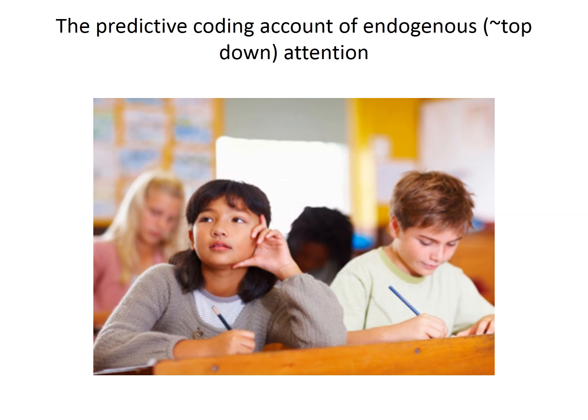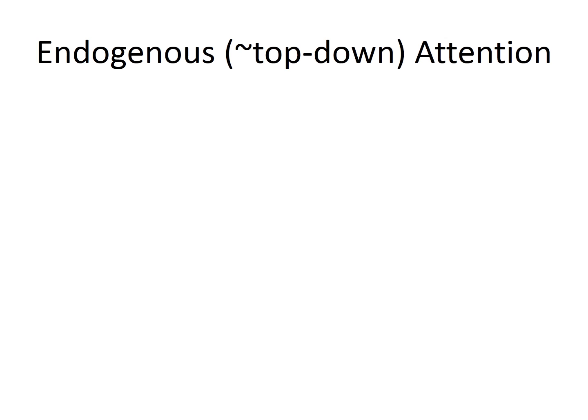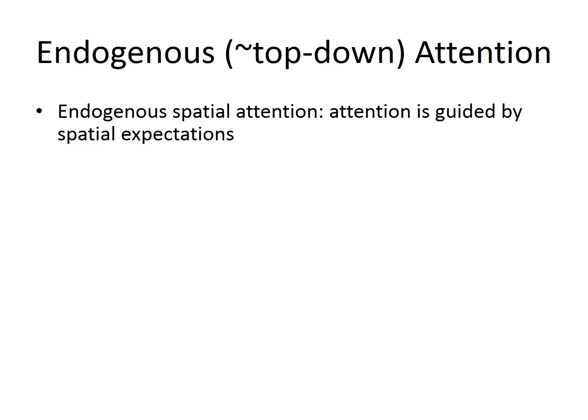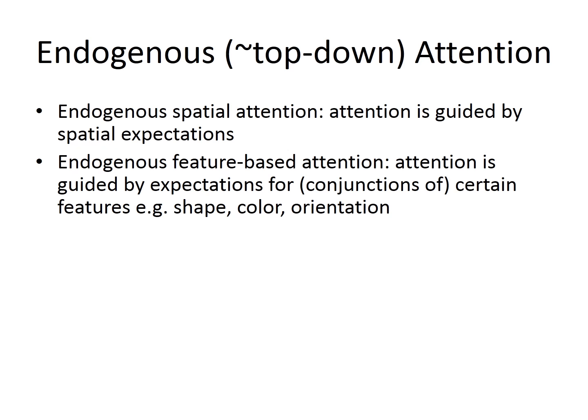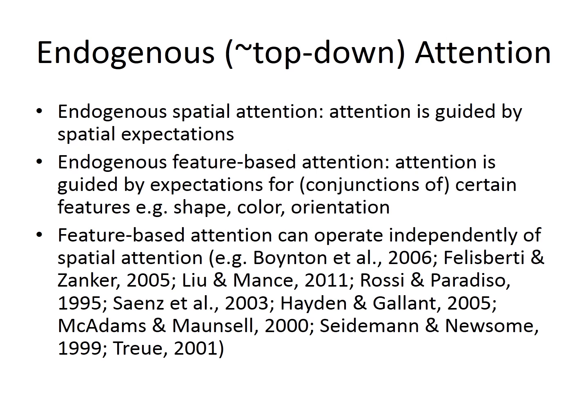To begin to set up our criticism of the theory, we are going to look at the predictive coding account of endogenous attention. Endogenous attention can be divided into several subcategories. We're going to look here at endogenous spatial attention, which is attention guided by spatial expectations, and endogenous feature-based attention, which is attention guided by expectations for certain features. So, we decide to look somewhere, or we decide to look for something. Importantly, feature-based attention can operate independently of spatial attention.